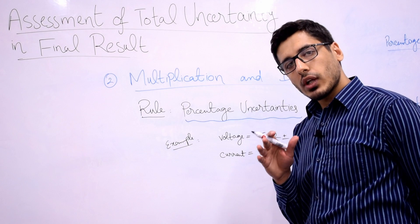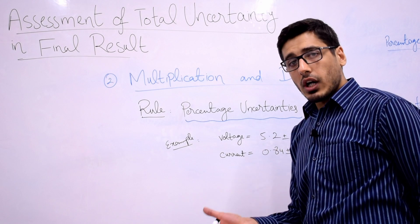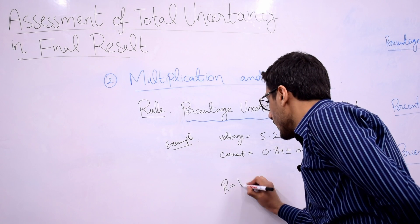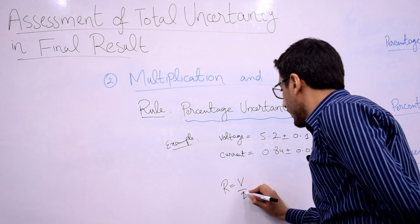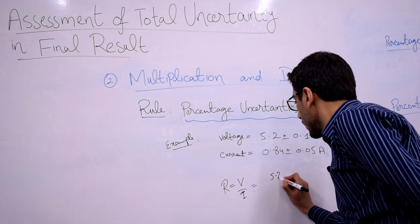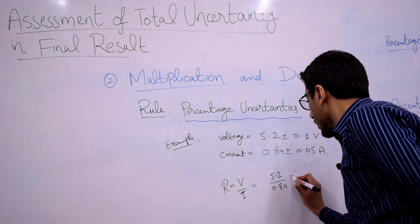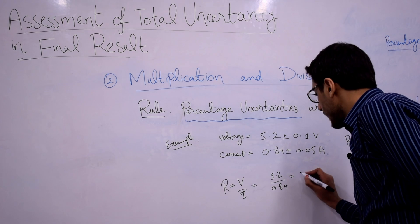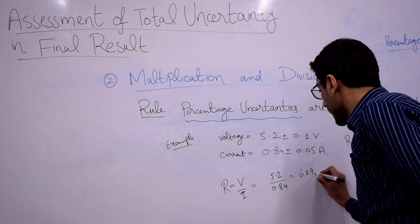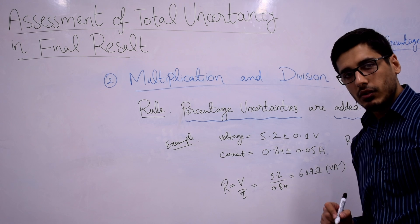Before jumping into calculating the uncertainty for R, let's first find the actual value of R using Ohm's law. R is equal to V over I, the value for V is 5.2 volt and the value for current is 0.84 ampere, and using the calculator you can find that the value of R is 6.19 ohm.